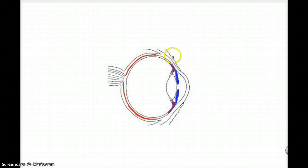So now we're going to talk about the structures of the uveal tract. It's these three structures here: this is the choroid, this is the ciliary body, and this is the iris.